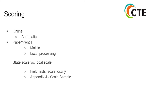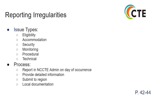Scoring can be done online automatically. For paper-pencil, you will need to mail in or do local processing. You will also find information on state scale versus local scale — Appendix J contains a sample scale. Field tests should be scaled locally. Testing irregularities, located on pages 42 through 44, are not limited to eligibility, accommodation, security, monitoring, procedure, or technical issues.